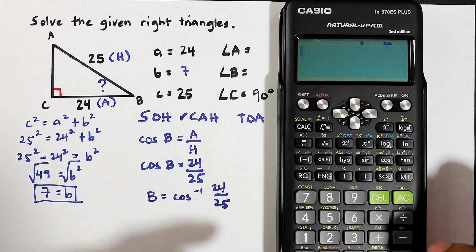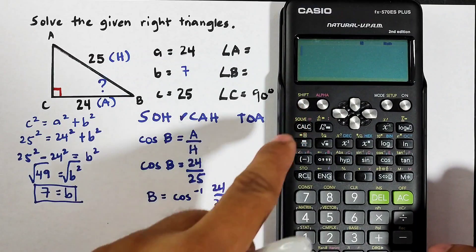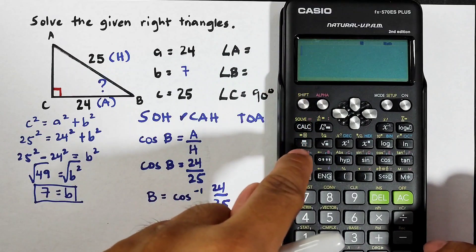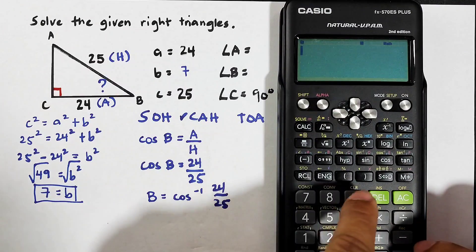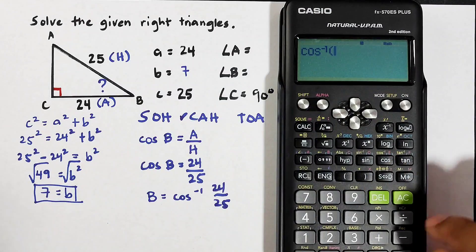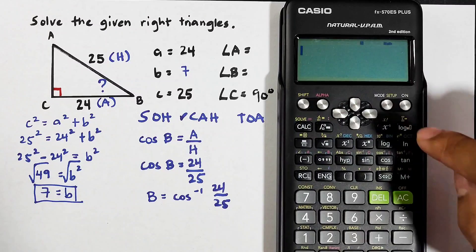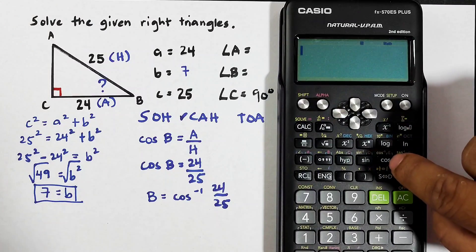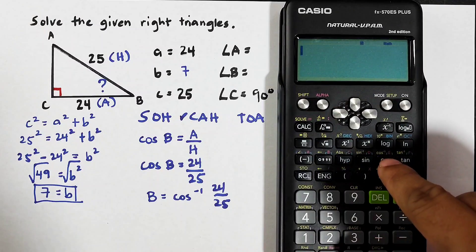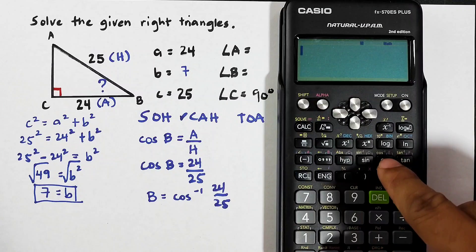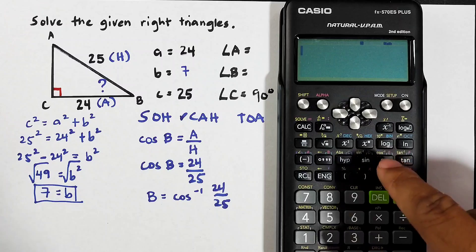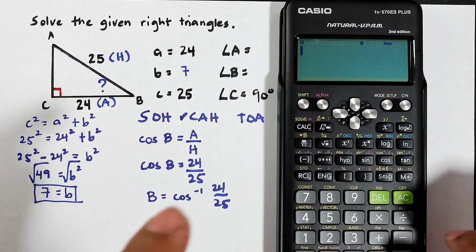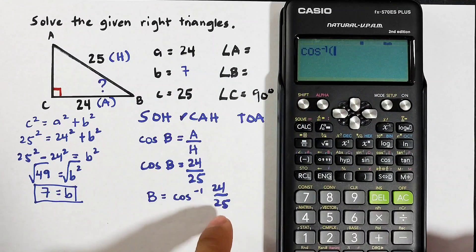So how can we do that in your calculator? Press shift first, and then cosine. For this button this is cosine, but as you can see on the top of it we have the cosine raised to negative 1. That is our target. To get that, press shift, cosine. Then for this fraction you have this button so you can input your fraction, that is 24 over 25.